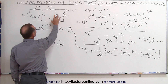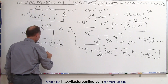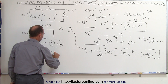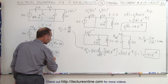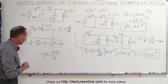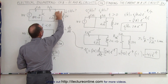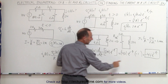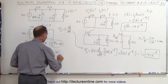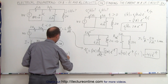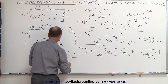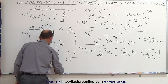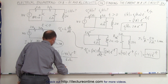Finally, we're now ready to find the current through the 6 ohm resistor. Using Ohm's law, the current through the 6 ohm resistor as a function of time equals the voltage across the 6 ohm resistor divided by the resistance, which is 6 ohms. The voltage across the 6 ohm resistor must equal the voltage across the inductor because those two branches are in parallel. The voltage across the inductor is minus 4 volts times e to the minus t, so this equals minus 4 volts times e to the minus t divided by 6 ohms. Therefore, the current through the 6 ohm resistor equals minus 2/3 amps times e to the minus t.